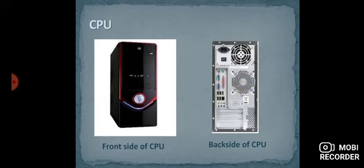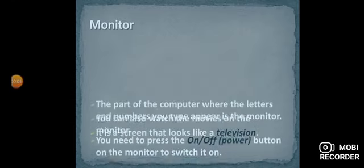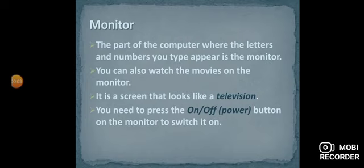Next we talk about monitor. The part of the computer where the letters and numbers you type appear is the monitor. You can also watch movies on the monitor, see games on the screen, and see a lot of things on the monitor. It is a screen that looks like a television.